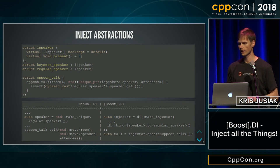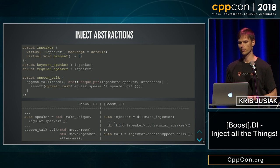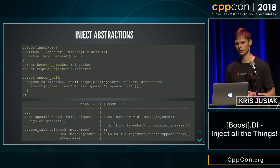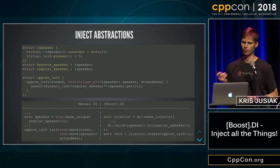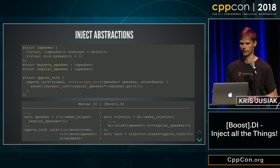What about abstractions? We can have a speaker which might be a virtual interface, or a concept-based type, or whatever we can think of, and pass it by unique pointer. With manual DI we still have to change everything and pass it through. With DI, we just say 'bind iSpeaker' — which is an interface — to anything which satisfies it, which would be the regular speaker. DI will figure it out and give us a compile-time error if the concept is not satisfied.